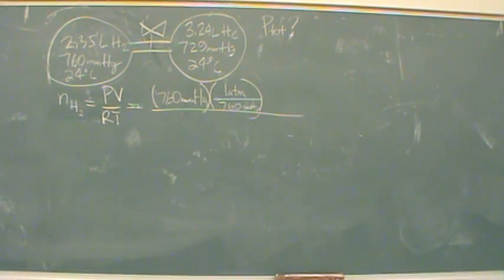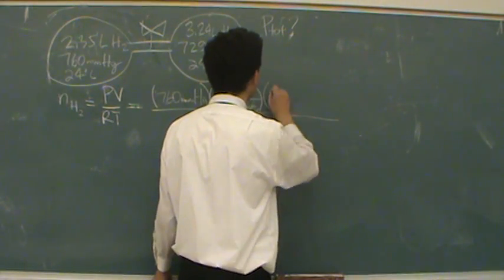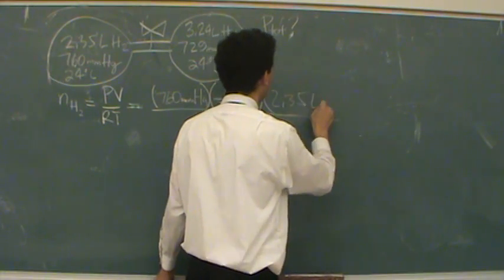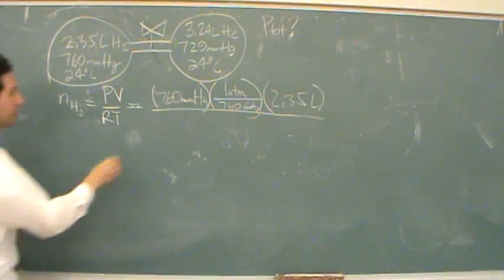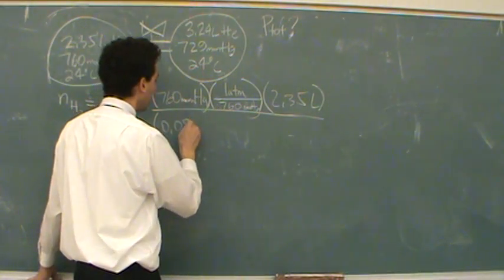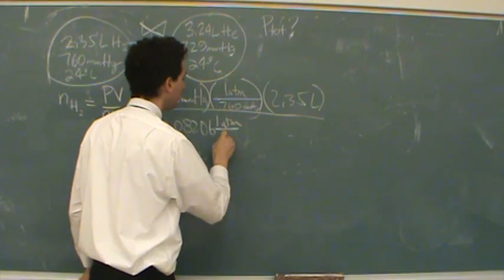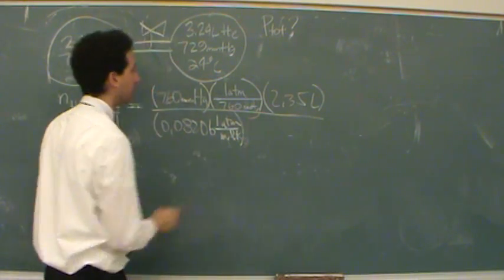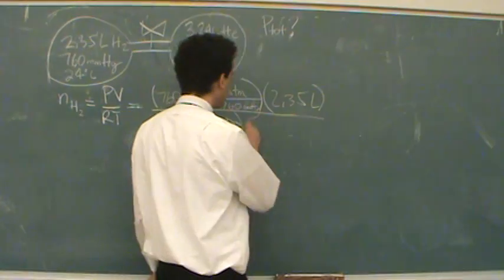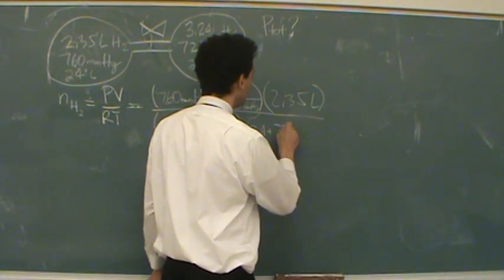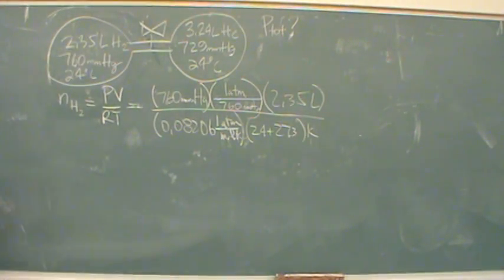That's pressure. Now let's do volume. The volume is 2.35 liters, and that's in the correct units for our R. R, now, 0.08206 liters atmospheres per mole Kelvin. Temperature is 24, but it has to be in Kelvins, that's Celsius, so 24 plus 273. So far so good?